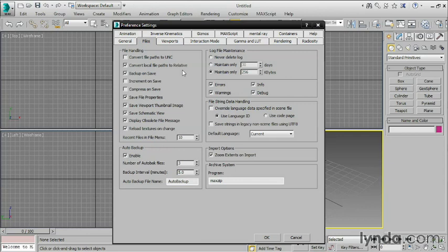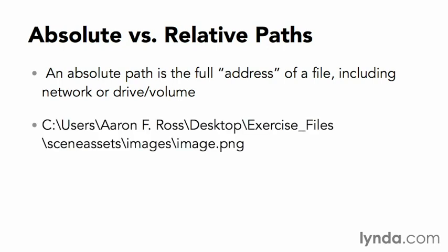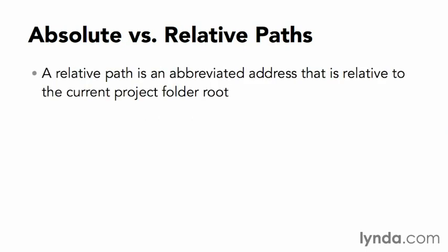Let me explain this briefly with a couple of slides. An absolute path is the entire address of a file, and that may include a network, a drive letter, or a volume name. For example, if I store something in my exercise file under Scene Assets Images, if it's an absolute path, it's going to include the drive letter and all of the nested folders. A relative path is just a shortened, abbreviated address — it only includes the data that's relative to the current project folder. With a relative path, we don't store the entire location; all we store is what folder it is inside the current project. In this example, the only thing stored would be Scene Assets Images and then the image name.